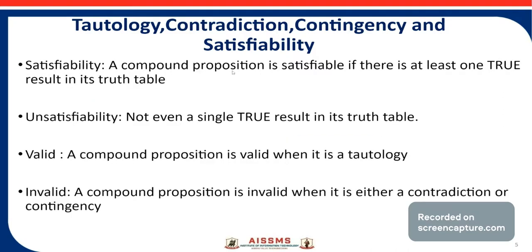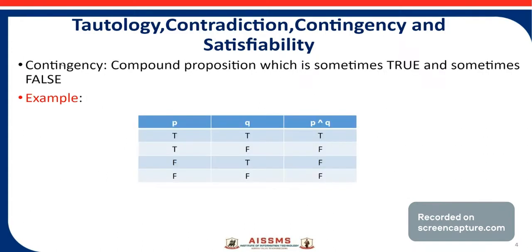Now the next one is satisfiability. A compound proposition is satisfiable if there is at least one true result in its truth table. See here — at least one true result in its truth table — then that compound proposition is called satisfiable. This truth table for P and Q contains at least one true value, so P and Q is also called satisfiable.